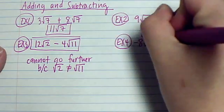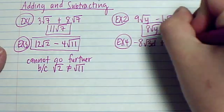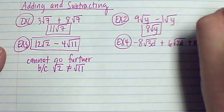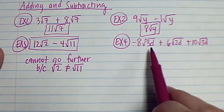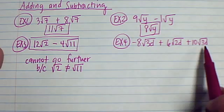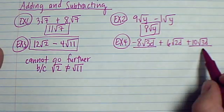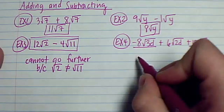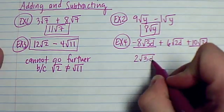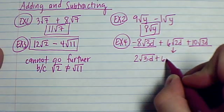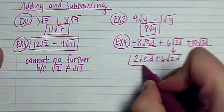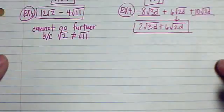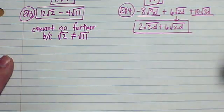Example 4: negative 8 root 3d plus 6 root 2d plus 10 root 3d. If I look at these, this one has root 3d, this one has root 2d, and this one has root 3d. So these two I can combine because they have the same radicand: negative 8 plus 10 is 2, giving 2 root 3d. Then I bring down 6 root 2d because there's nothing else to combine with it. So the answer is 2 root 3d plus 6 root 2d.